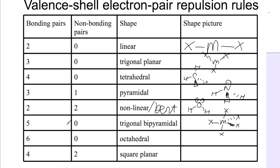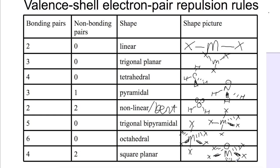For six bonding pairs — one of the most common, especially for metal complexes — we form an octahedral, with all atoms at 90 degrees to each other, forming a square around the middle with two atoms going above and below. The final shape is square planar, where non-bonding electrons really come into play. With two non-bonding pairs, they get as far away from each other as possible, so the four bonding atoms form a square around the metal, with lone pairs above and below.